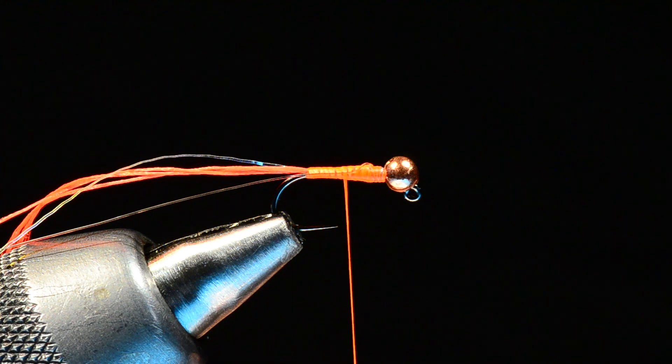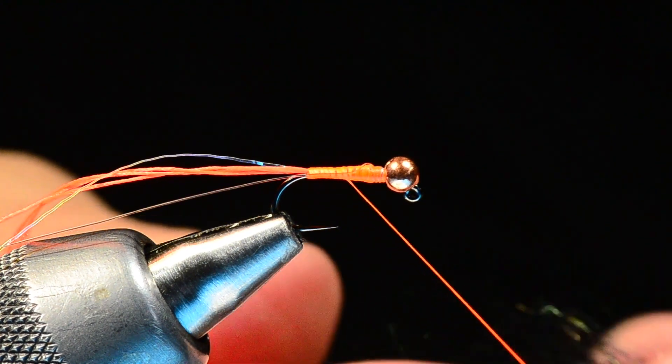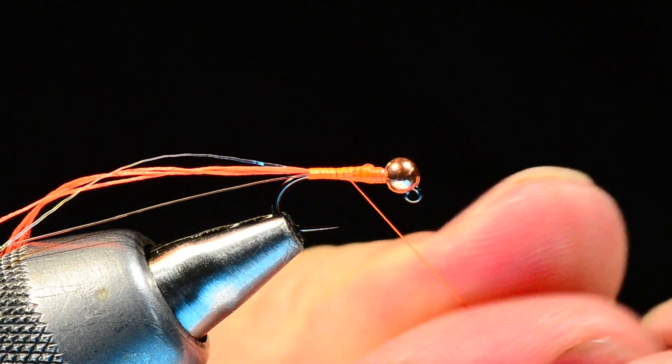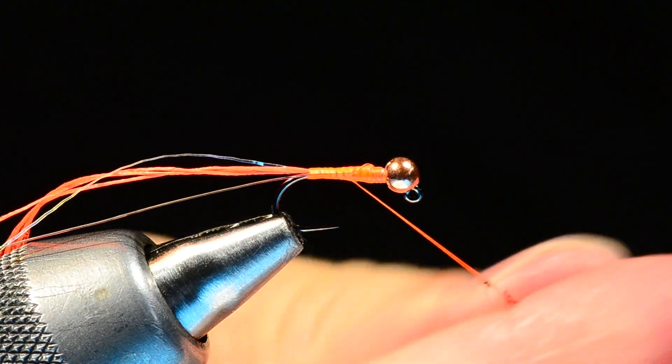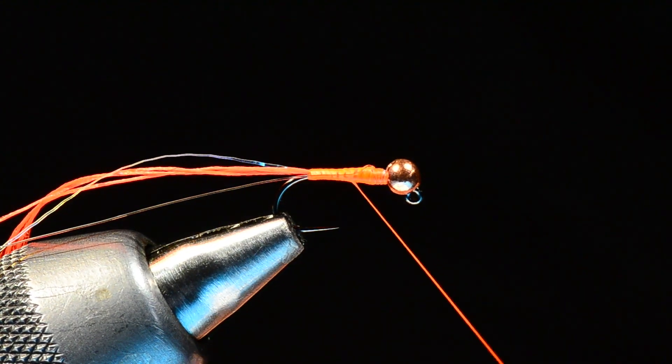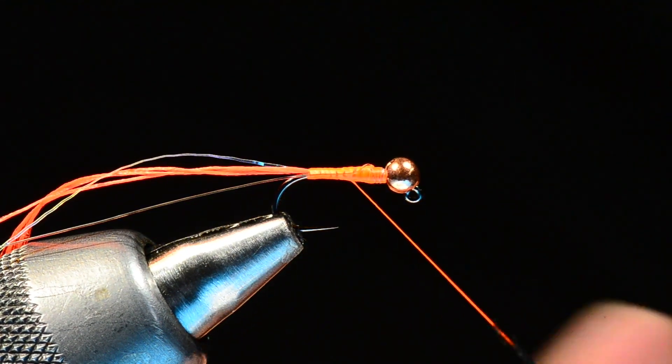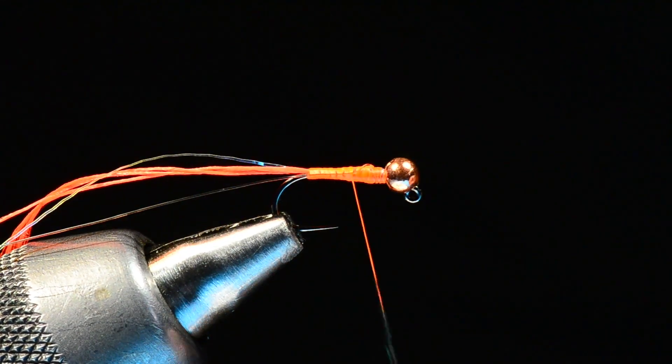I'm going to come in with a black peacock eye stubs dubbing. This is going to be the body and we don't need a bunch. You can see we've already built most of the taper up just with the thread and the lead. I'm going to take a bit of this black peacock eye stubbing and twist it down tightly just enough to cover the thread.